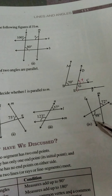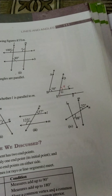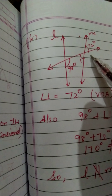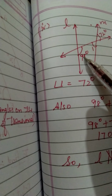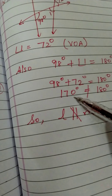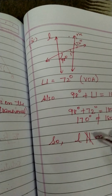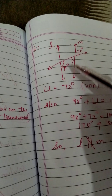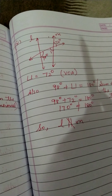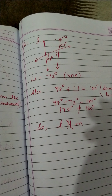Fourth part में 98 degree और 72 degree दिए हैं। Angle one vertically opposite है, यानि angle one 72 degree है। लेकिन 98 + 72 = 170 degree आ रहा है, जो कि 180 के equal नहीं है। इसलिए line L और M एक दूसरे के parallel नहीं हो सकती। इस तरह आज आपकी exercise 5.2 complete हो चुकी है। Complete your questions 5 and 6 in your notebook।